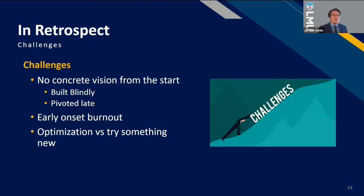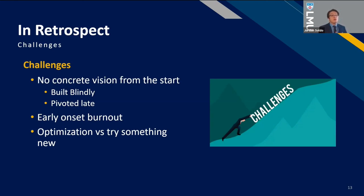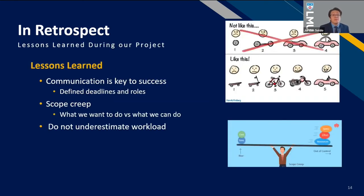We also attribute some of this to early-onset burnout — be it COVID, be it school, there was a wide range of things that slowed us down. And lastly, our biggest issue was optimization versus trying something new. Especially with machine learning, whenever our model wasn't working, we moved on to a different model. What we should have spent more time on is actually optimizing the things we had and making them better.